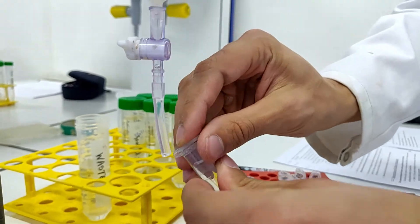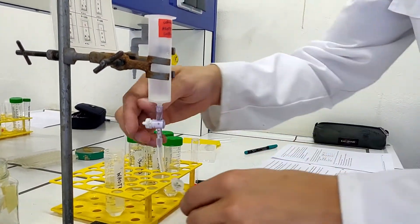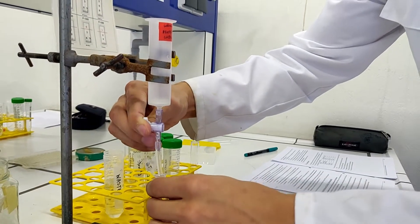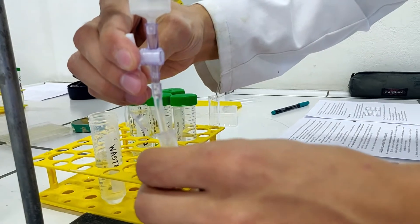The flow-through is carefully collected in 10 Eppendorf tubes, and on every sample, the OD is measured, to be able to see which tubes contain the highest concentration of purified GNA lectin.